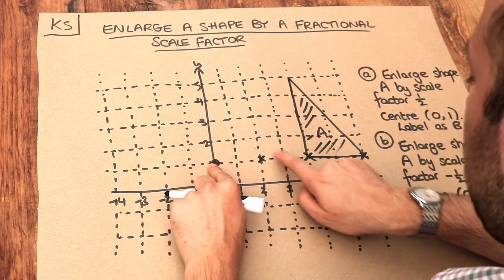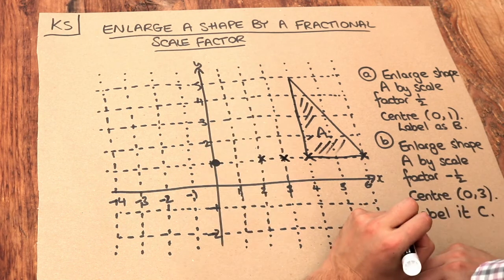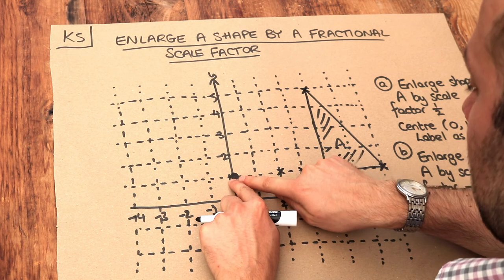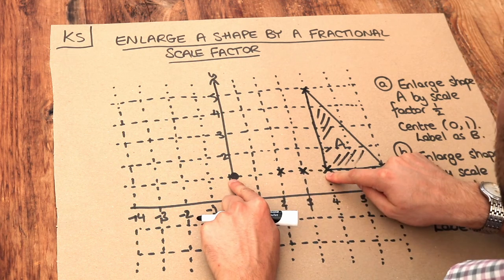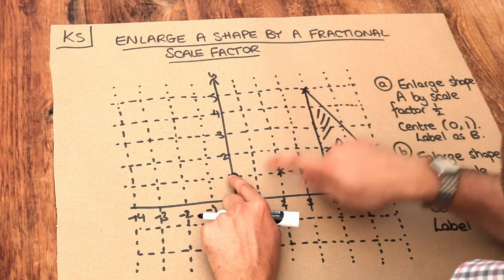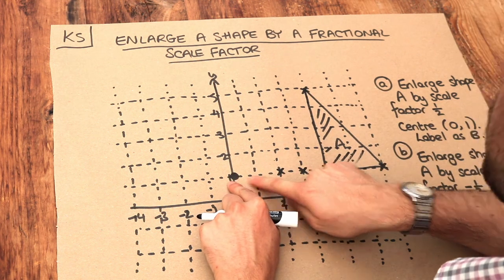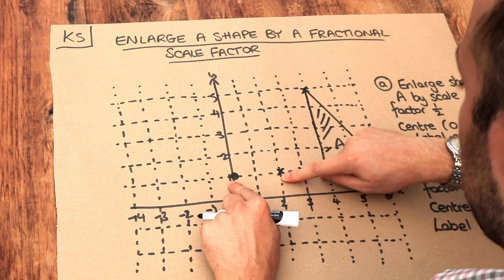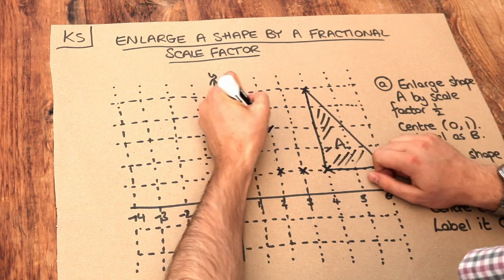Again, starting from here, 1, 2, 3, so our new point is here. Finally, this point at the top - starting from here, 1, 2, 3, 4 right and 1, 2, 3, 4 up. The 4 right becomes 2 right and the 4 up becomes 2 up, because we're halving them.